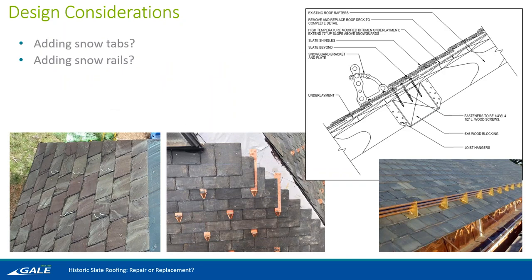Another design consideration is snow management. You might have a historic building that already has a snow management system, but if you don't, you may be experiencing issues with sliding snow. Slate is a relatively slippery surface. The two systems typically used are snow tabs or snow rails. What you often see with historic slate roofs are pigtail snow tabs — basically just copper wire in a loop. We often find them deformed; they're really not that robust, as you can imagine with a lot of snow against that small piece of wire. If you are pursuing a full replacement project, you might want to go back with a pre-manufactured style of snow tab.